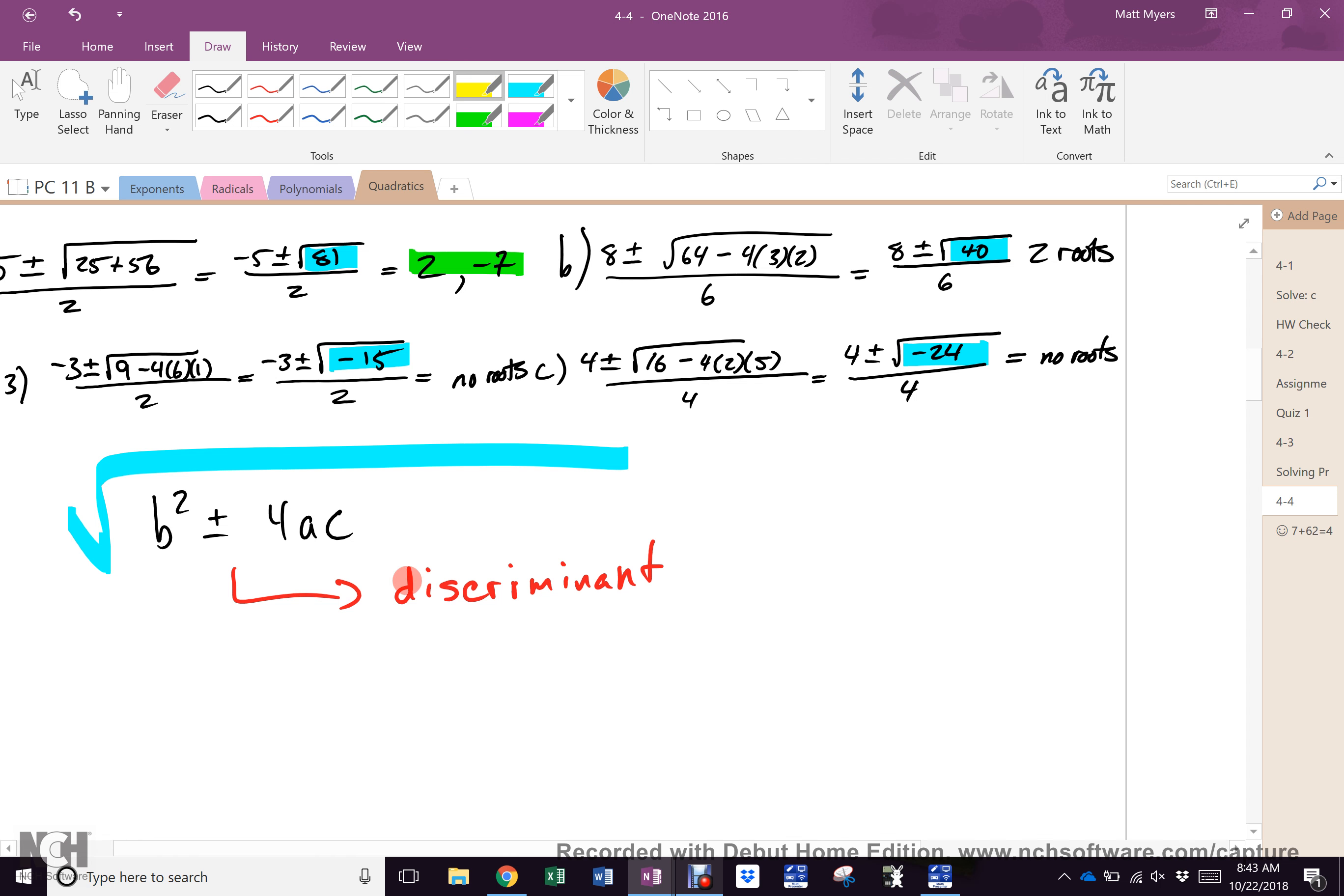Please highlight this. Bad Crumble Cloud around it, star, do whatever you need to do to remind yourself that this particular piece of information is important in quadratics. It's called the discriminant. You should see a word in there. What word do you see in there? Discriminate.